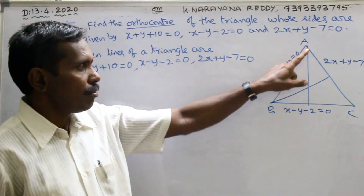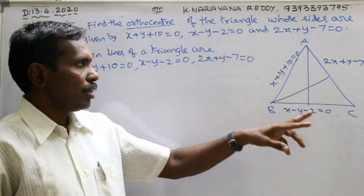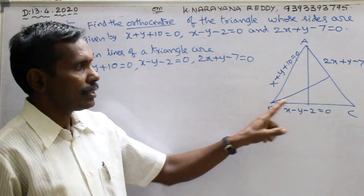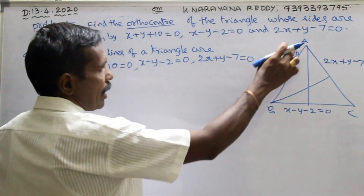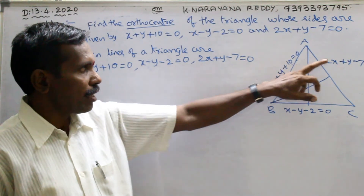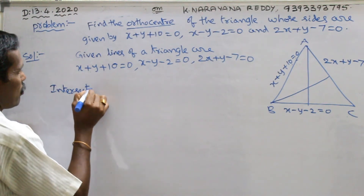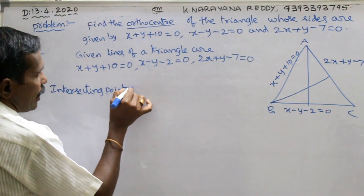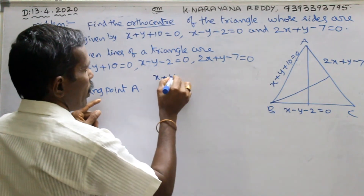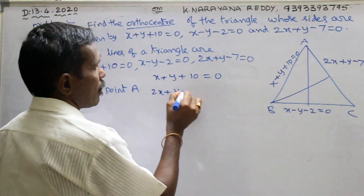First, find point A, point B, point C. Any intersecting point can be found. I will find intersecting point A. By combining these two equations you can get A. Intersecting point A equals to — solve these two: x plus y plus 10 equals to 0 and 2x plus y minus 7 equals to 0.